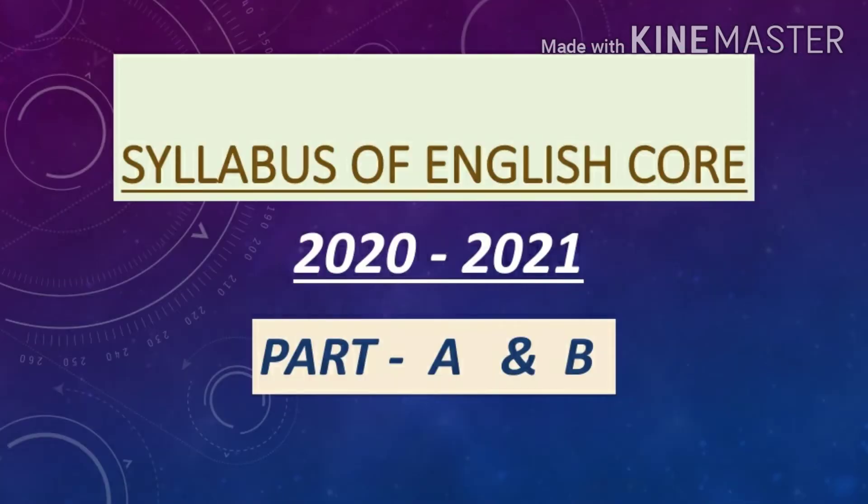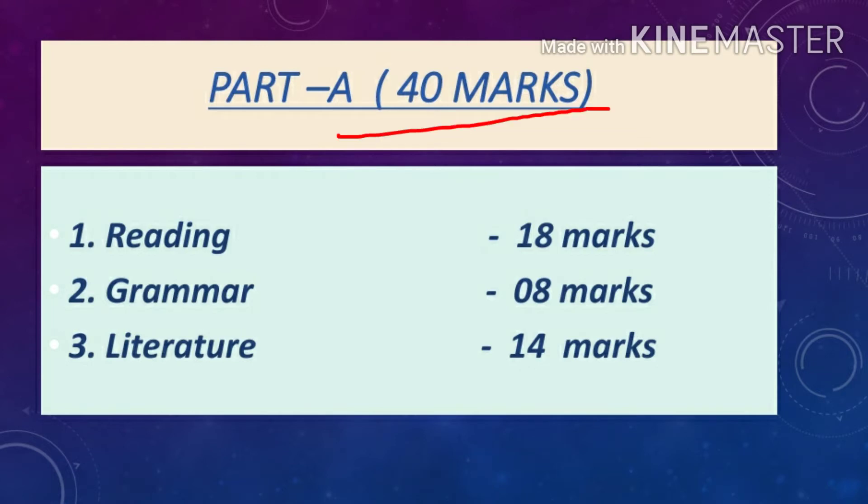Now talking about the syllabus of English, it is divided into Part A and B. First we will be discussing Part A. Part A carries 40 marks, in which first is reading section that carries 18 marks, then comes grammar that carries 8 marks, and at last literature portion that carries 14 marks.